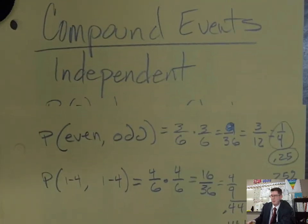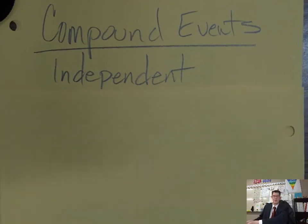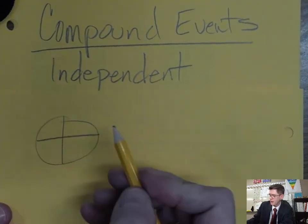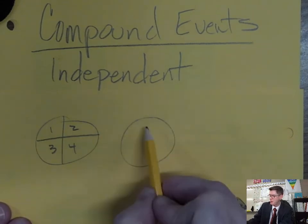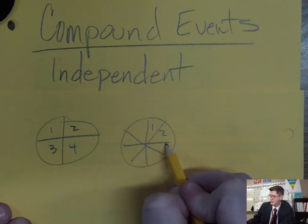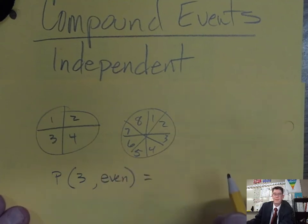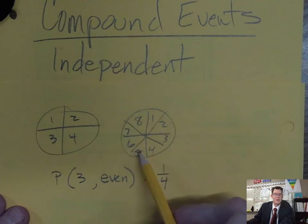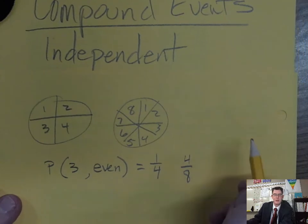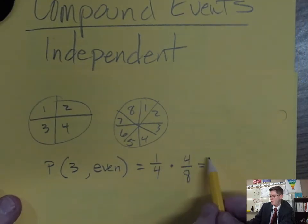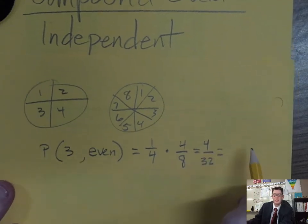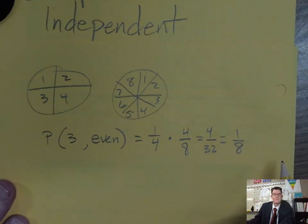Let's spend a couple more minutes on it. What if I've got a spinner numbered one through four, and a second spinner numbered one through eight? What's the probability of getting a three on the first spinner and then an even number on the second? The probability of getting a three is one out of four. The probability of getting an even number on the 1–8 spinner is four out of eight. Multiply them together: one times four is four, four times eight is 32. That simplifies to 1/8, or on your calculator 0.125 — 12.5 percent.